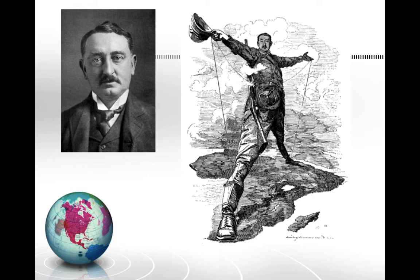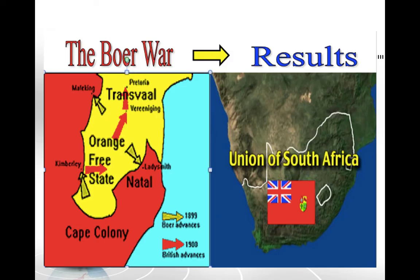To summarize: the British kicked the Dutch out of Cape Colony, then helped them fight the Zulu, then kicked them out further to take over the diamond and gold territory. Here's a map showing Boer advances — the British are in red and the Boers in yellow — ending in the Union of South Africa. This is where most of the diamonds and gold were, and where the De Beers Diamond Company was established.